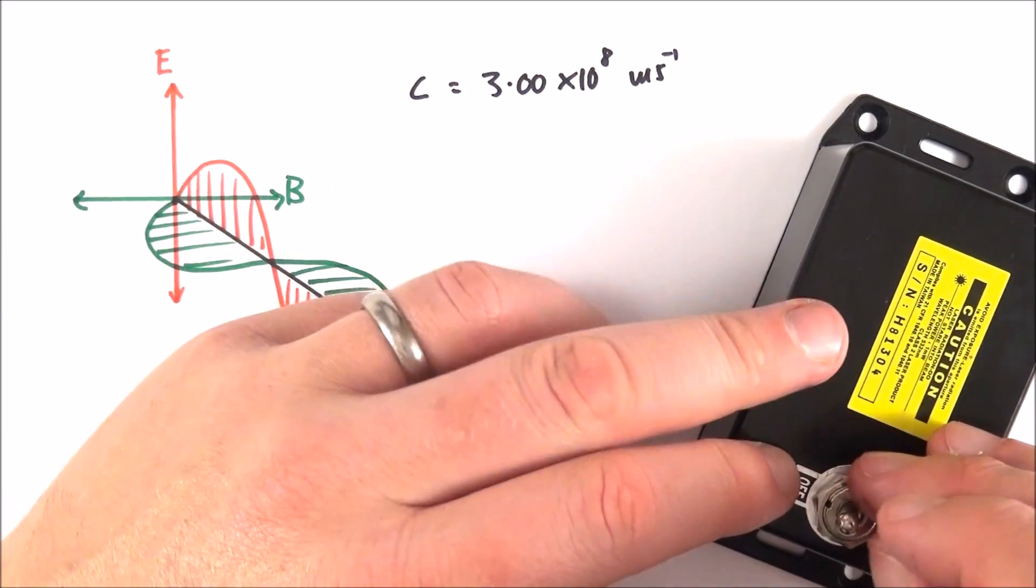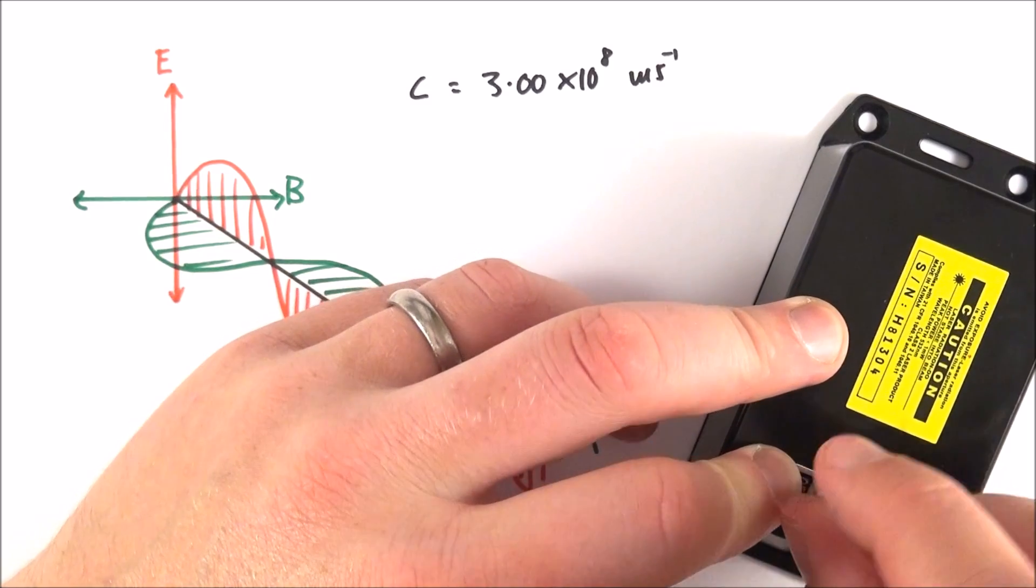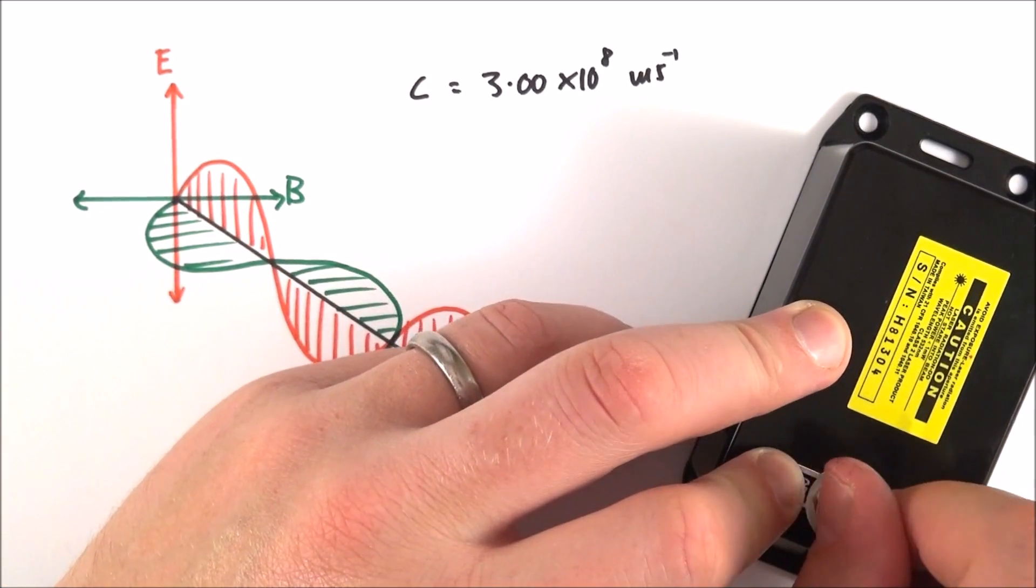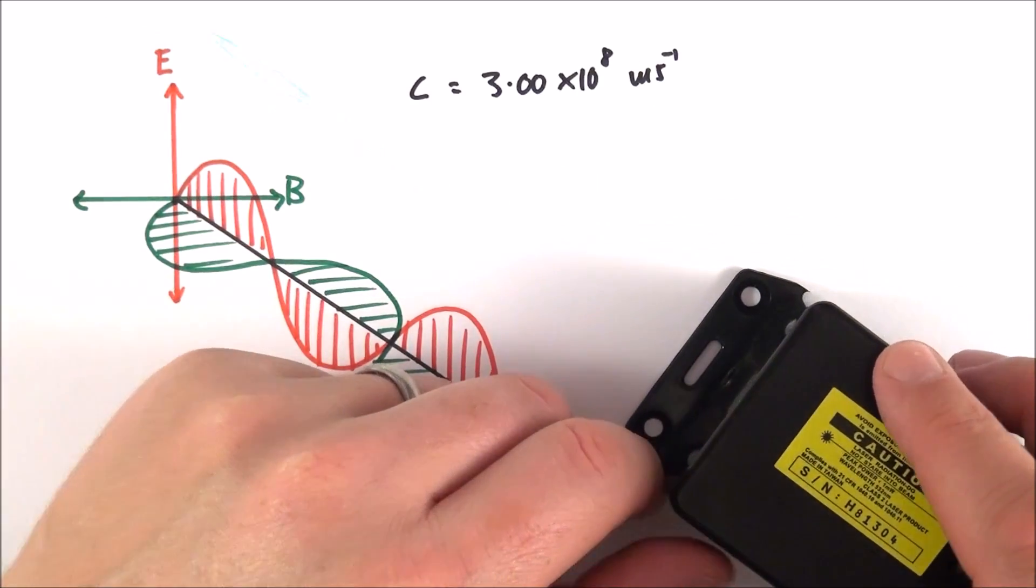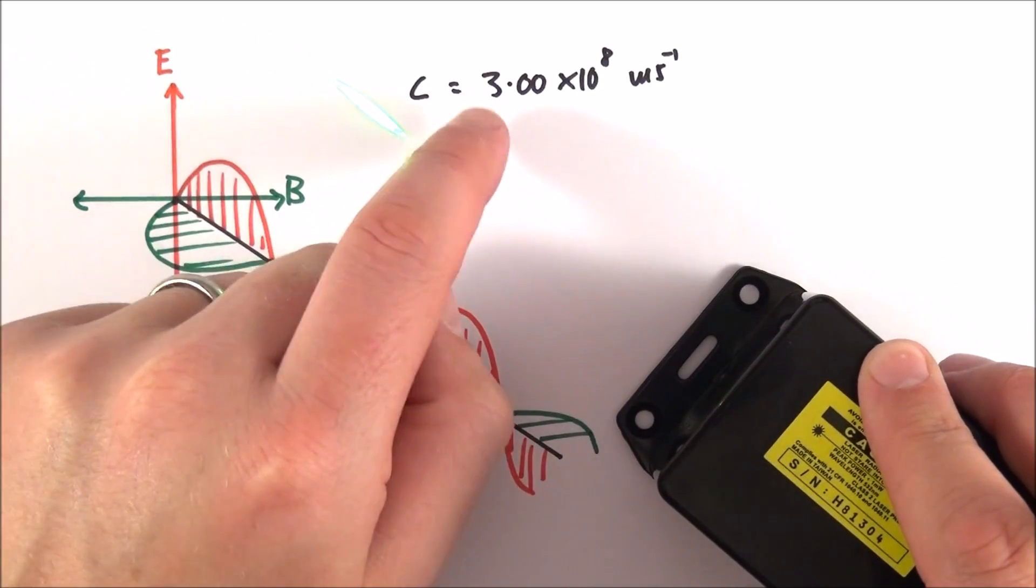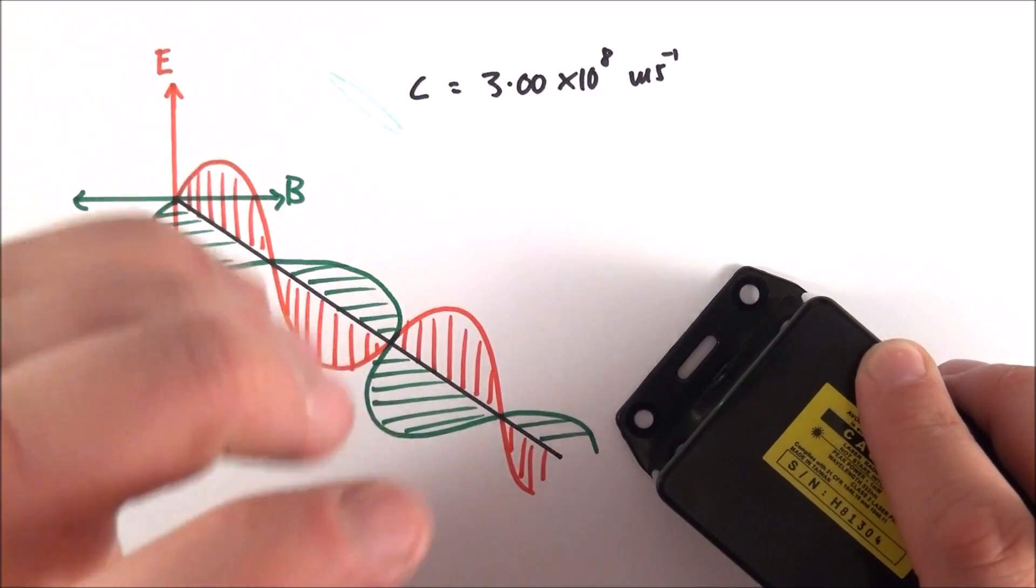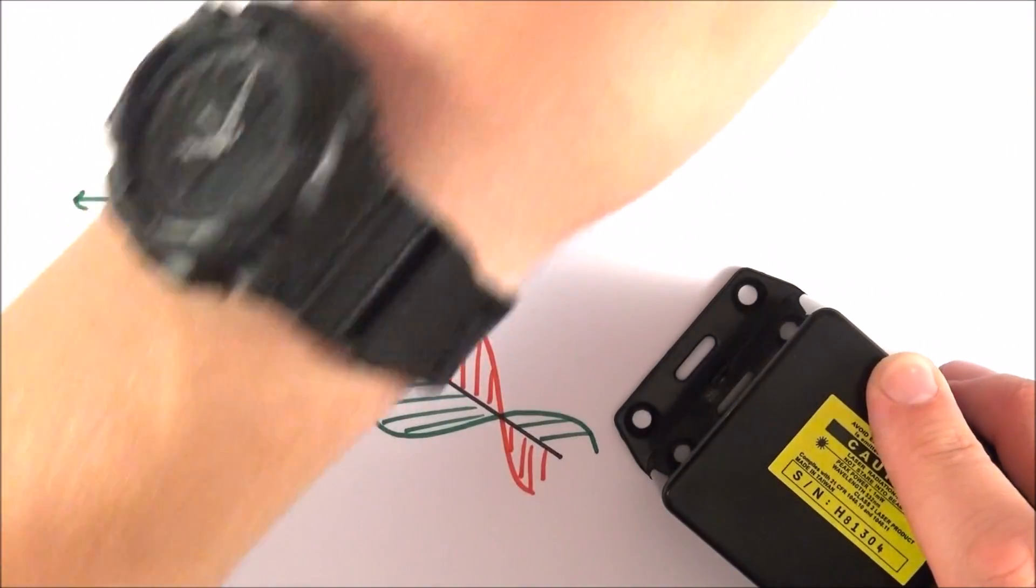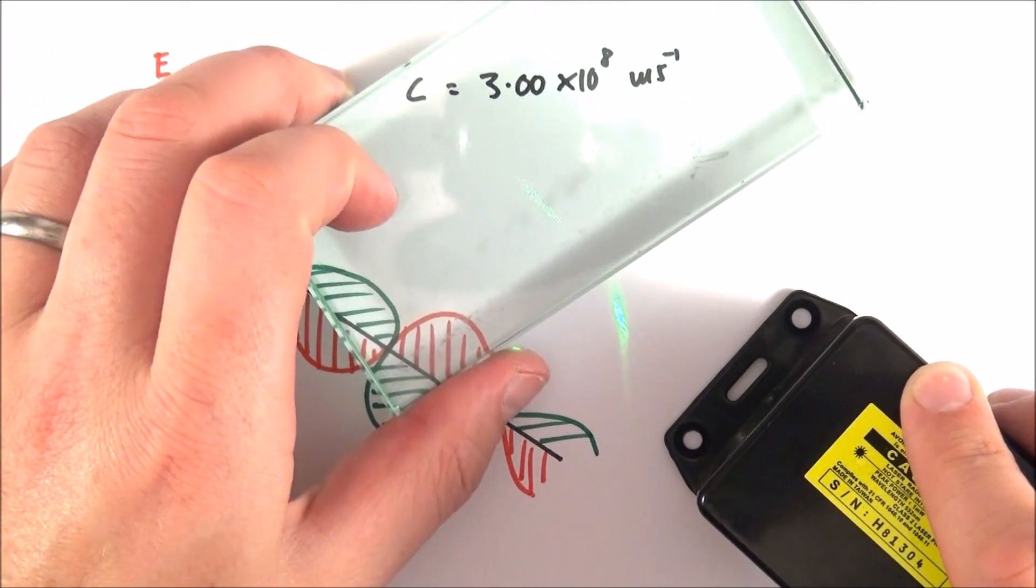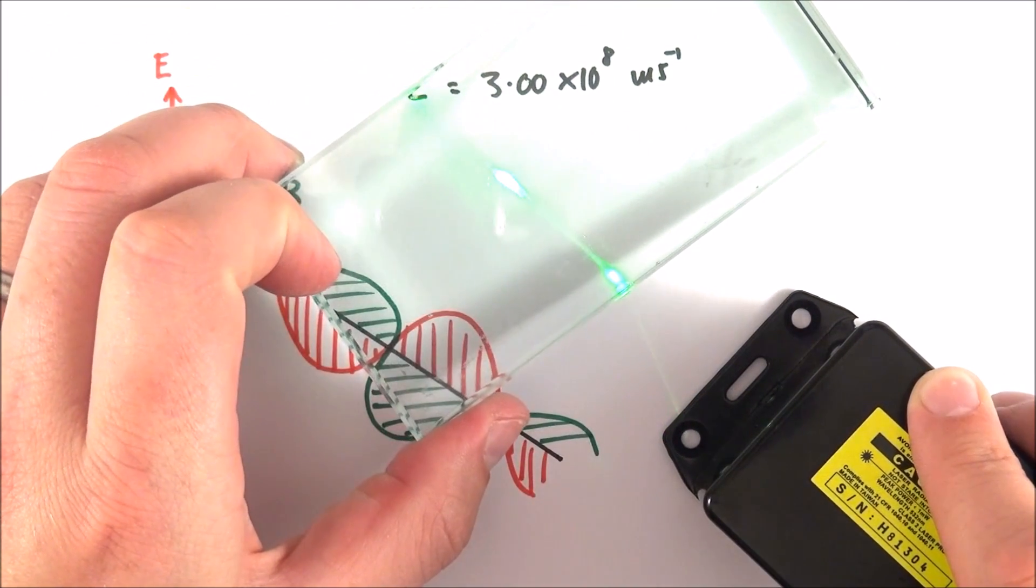Also over here I have a laser. If I just flick it on, I'm just making sure there's no reflected light which is going to hit me. This is actually a green laser, and so the light here is traveling at about 3 times 10 to the 8 meters per second in air, which is pretty similar to a vacuum.